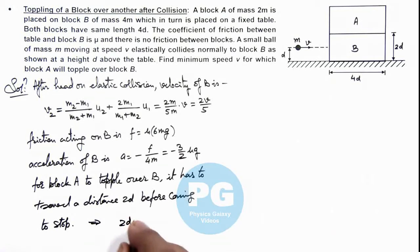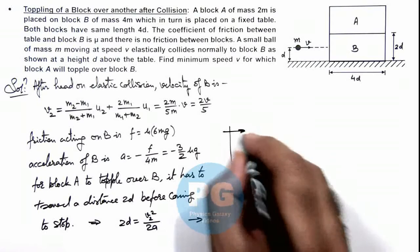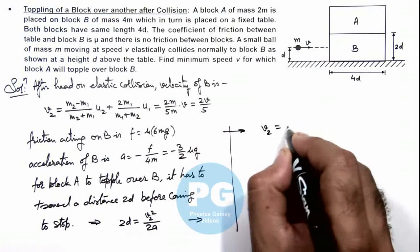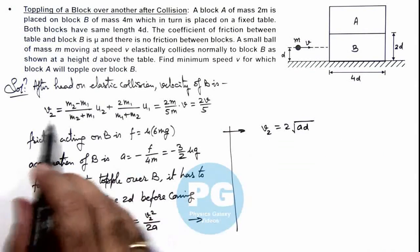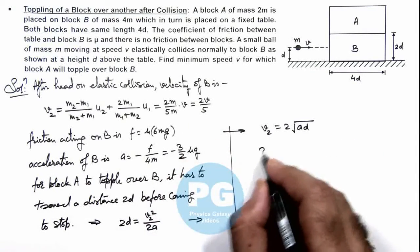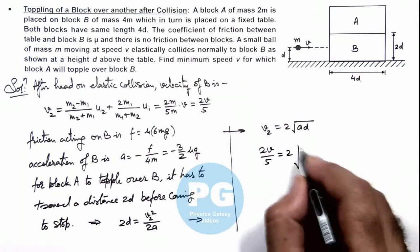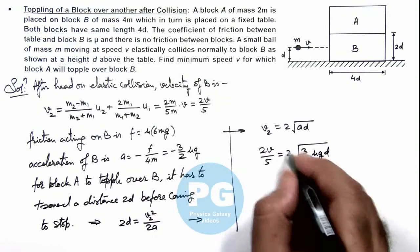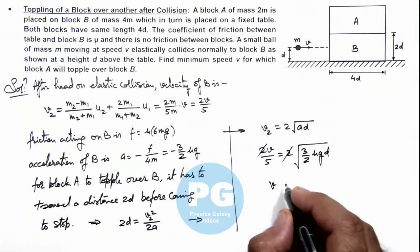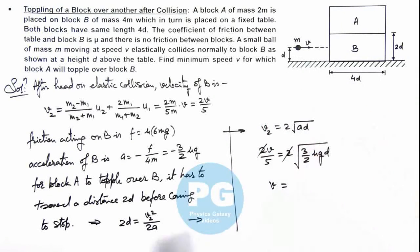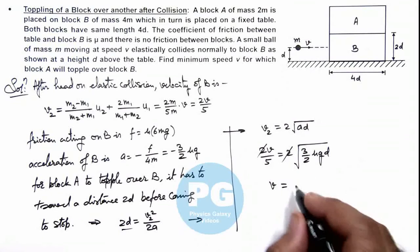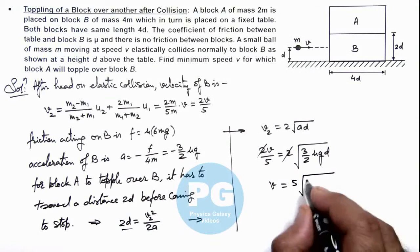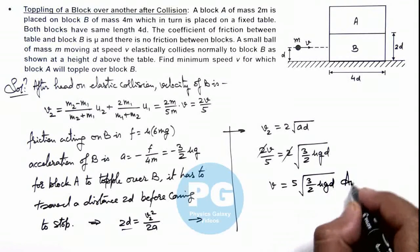So here we can write 2d is equal to v2 squared divided by 2a as it is retarded by a. So here if we continue again we can see the value of v2 we are getting is twice of root ad. And the value of v2 we calculated as 2v by 5 if we substitute this 2v by 5 is equal to twice of root of acceleration we have calculated in magnitude as 3 by 2 μgd. So here this 2 gets cancelled out and the value of v, the speed of ball for which B will be able to travel a distance 2d, can be given by 5 times root of 3 by 2 μgd. That will be the final result of this problem.